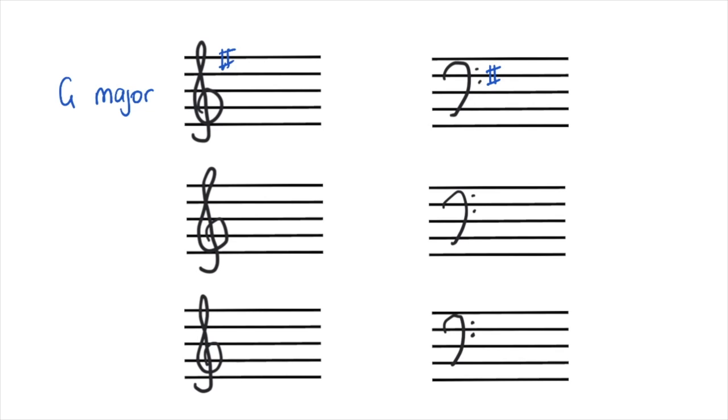The key signature with B-flat looks like this on the treble clef, and like this on the bass clef, it's called F-major. The key signature with F-sharp and C-sharp looks like this on the treble clef, and looks like this on the bass clef, and it's called D-major.